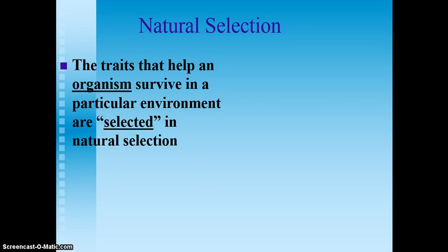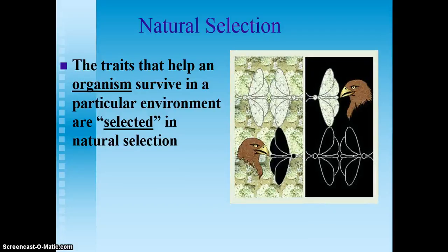That doesn't mean that the organism chooses to have better traits. It's just that for whatever reason, something about that organism makes it more likely to survive, and the key is that once they survive, they are more likely to find a mate and reproduce offspring.